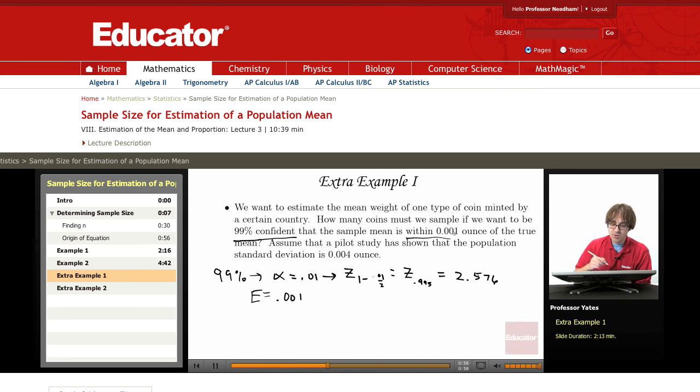And we're going to assume that the population's standard deviation is .004. So sigma is .004.